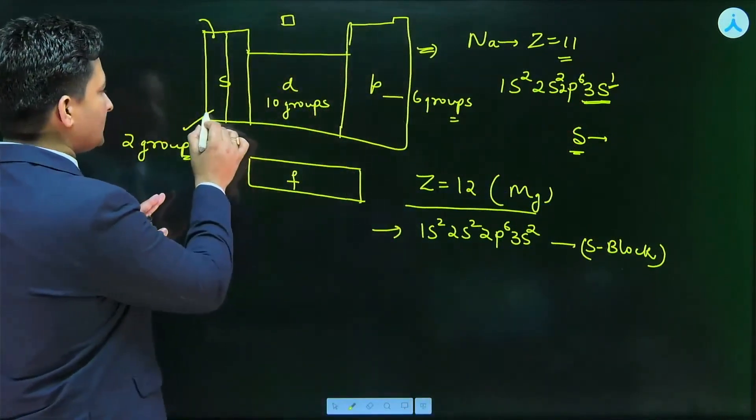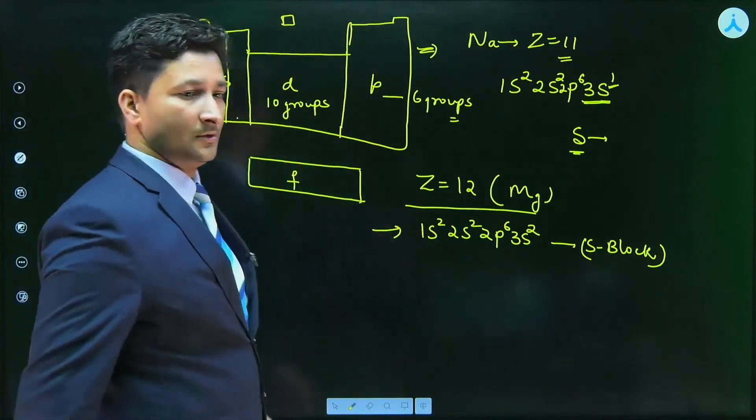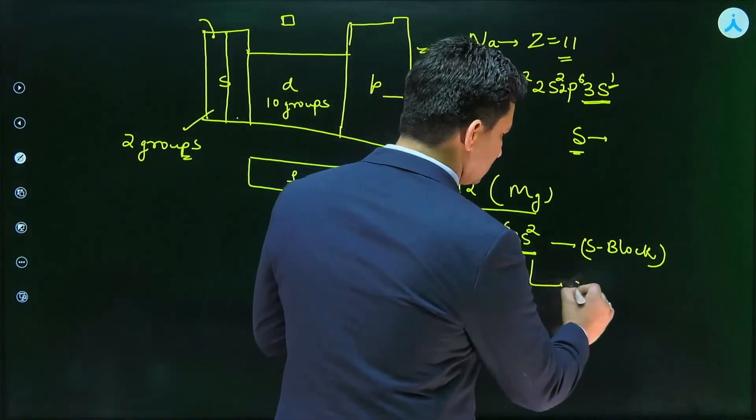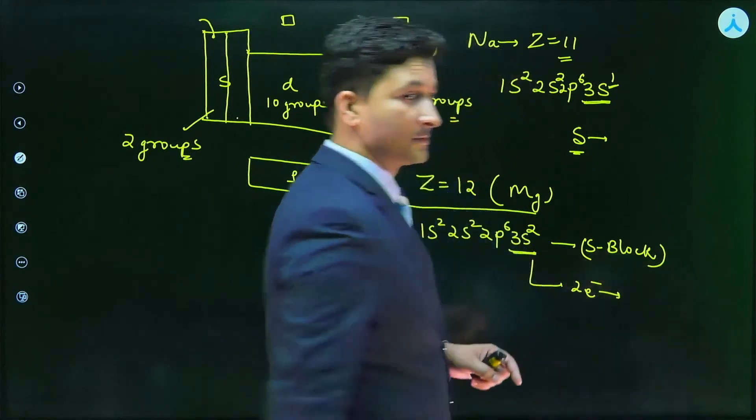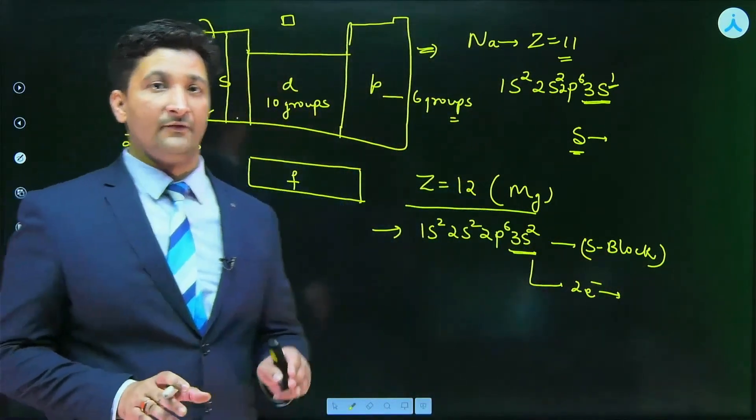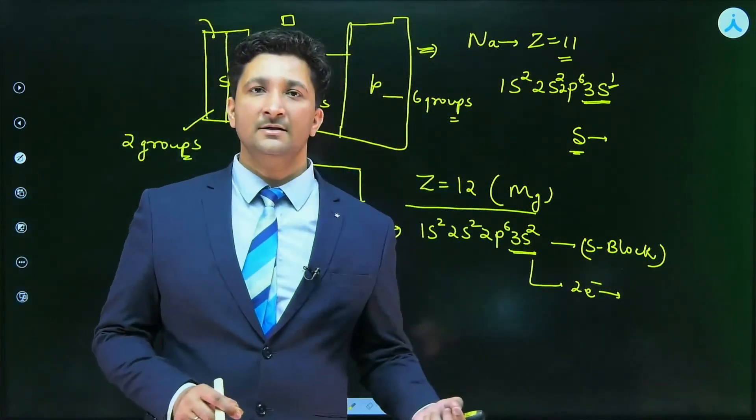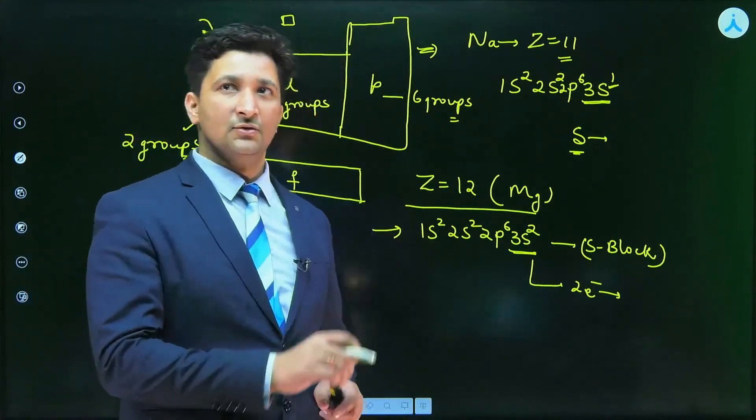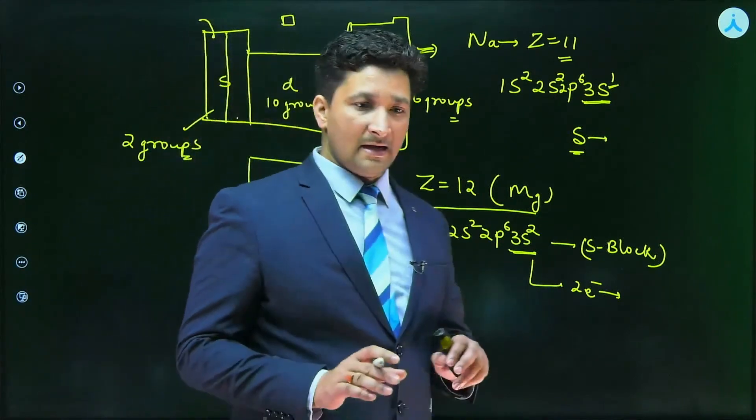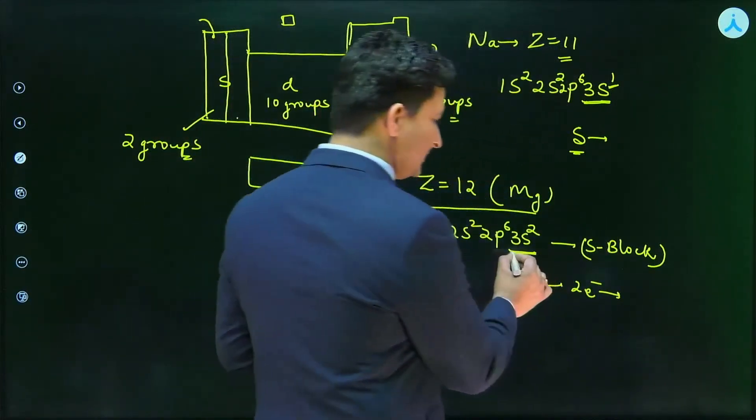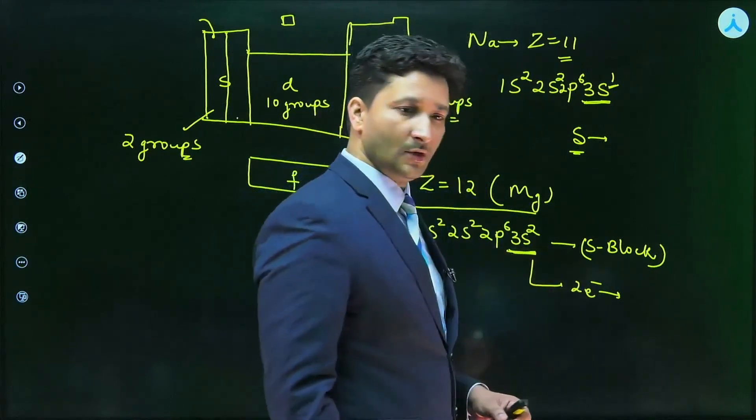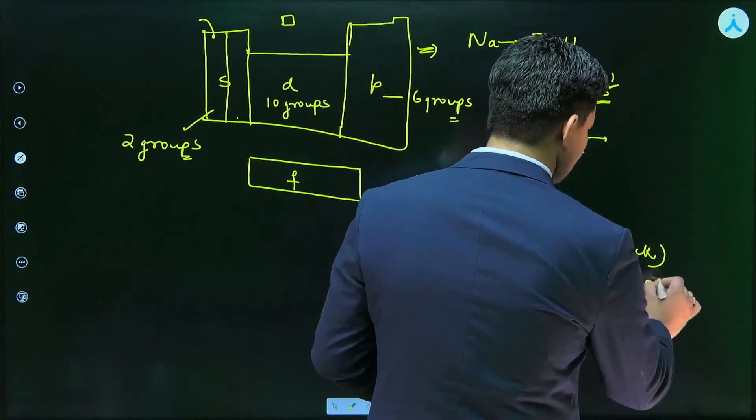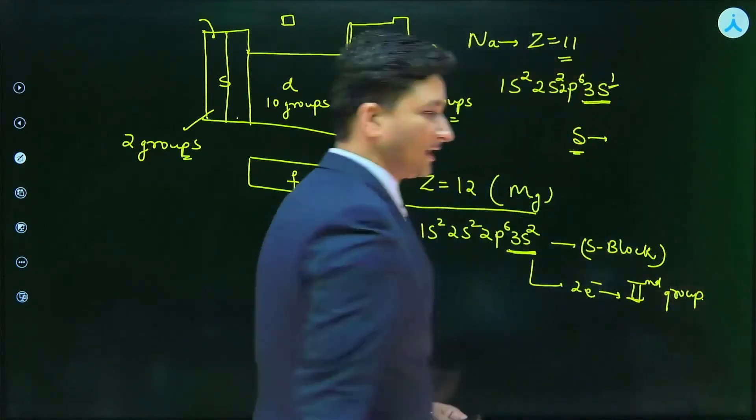It means it is belonging to either group 1 or group 2 of the S block. Now, you can see that this S has two electrons. If the outermost electronic configuration for S block element is ns1, then the element belongs to first group. If the outermost electronic configuration is ns2, then the element belongs to group 2. As you can see, Magnesium has 3s2, two electrons, so it belongs to second group.